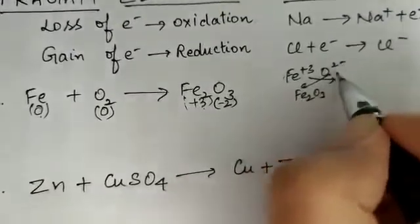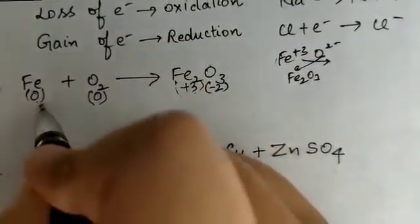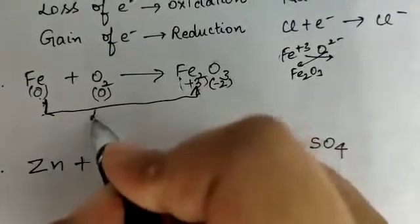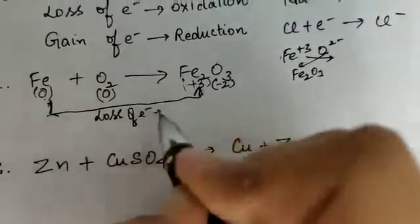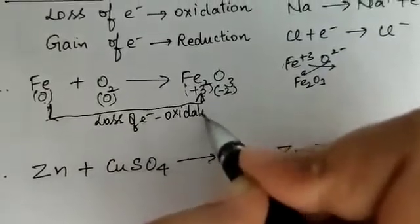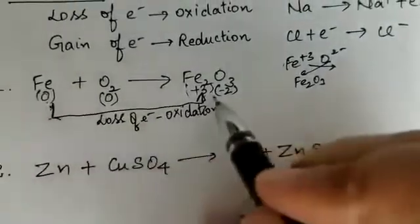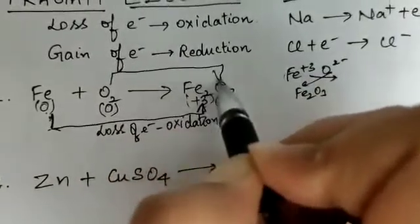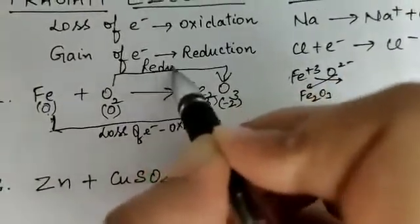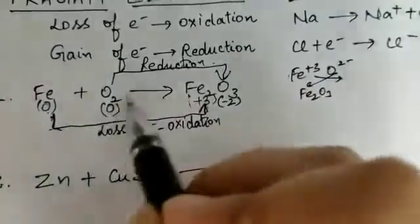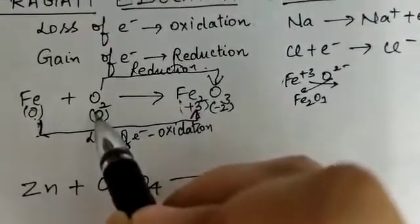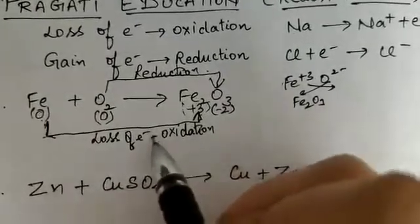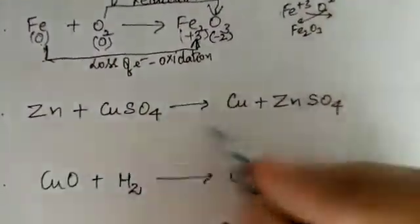Fe is carrying plus 3 charge here and oxygen is carrying minus 2 charge. Fe is losing 3 electrons and becoming Fe plus 3 — that is loss of electron, and we call it oxidation. So iron is getting oxidized to Fe₂O₃. If we talk about reduction, oxygen is gaining 2 electrons, so reduction is happening here. We call oxygen the oxidizing agent and iron the reducing agent.